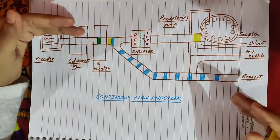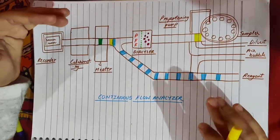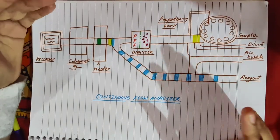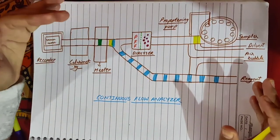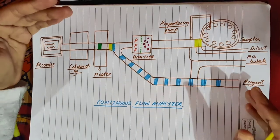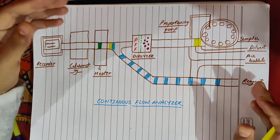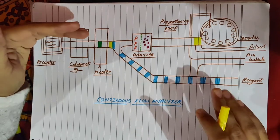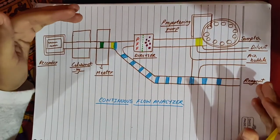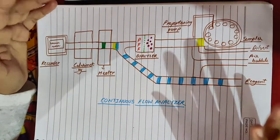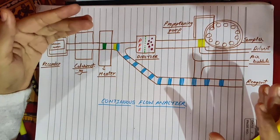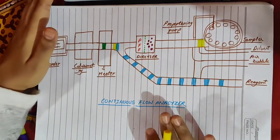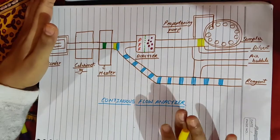For example, we have samples — like glucose, creatinine, protein. We have to detect that sample; we call it to analyze. Why is it called auto analyzer? Because it works automatically and analyzes. This is our continuous flow analyzer.